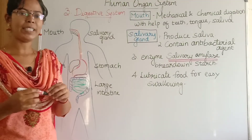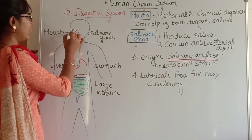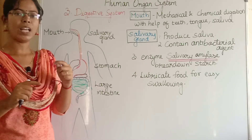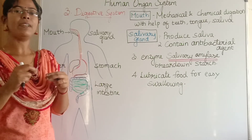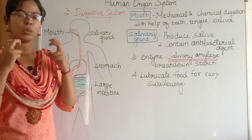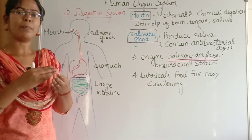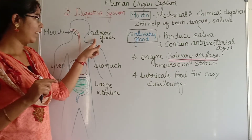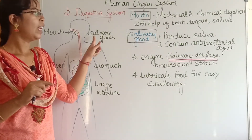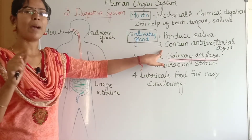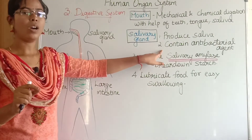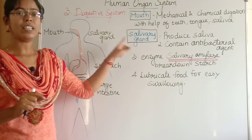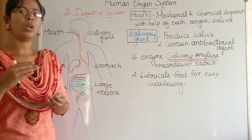The very first part of the alimentary canal is the mouth, where the digestion process first starts. In the mouth we have teeth, where mechanical and chemical digestion takes place. When we chew, food particles break down. In the mouth we also have saliva — the salivary gland contains an antibacterial agent and salivary amylase, which helps in the breakdown of starch.